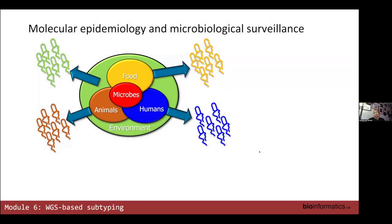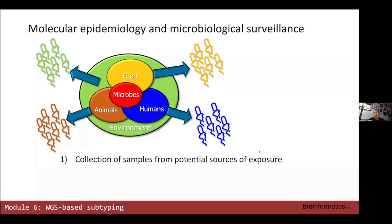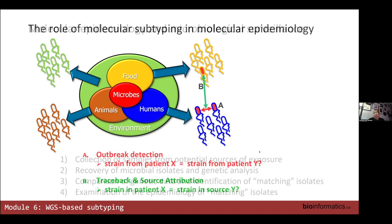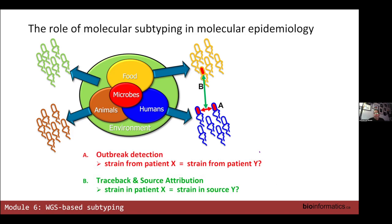The role of epidemiology and surveillance is very important because at the end of the day we're trying to link infectious agents to potential human or animal clinical cases. It begins with collecting samples from potential sources of exposure, recovering microbial isolates to characterize them, comparing genetic data, identifying potentially matching isolates, and examining their epidemiology — thus identifying case clusters that look like potential outbreaks and tracing back to potential sources of exposure to implement public health measures.